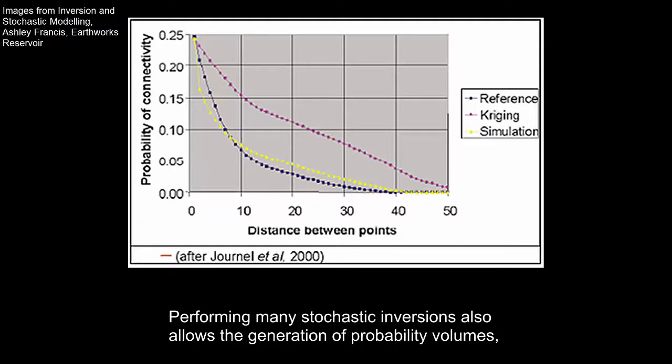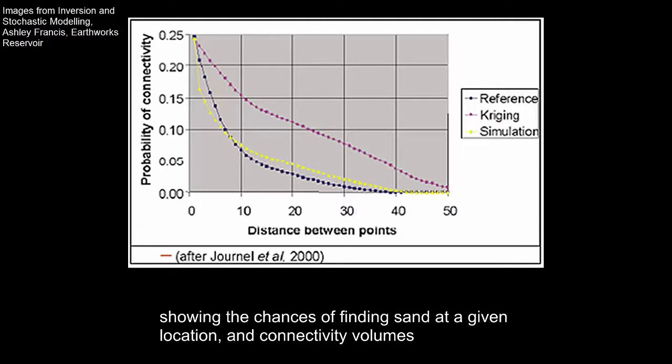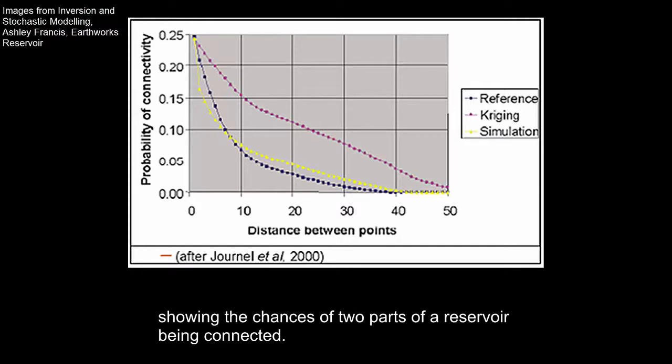Performing many stochastic inversions also allows the generation of probability volumes, showing the chances of finding sand at a given location, and connectivity volumes, showing the chances of two parts of a reservoir being connected.